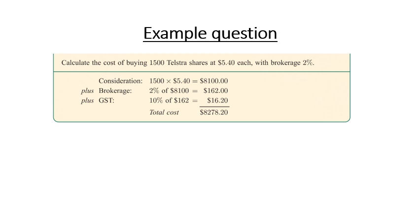So we talked about in the previous slide buying shares and having three different things that you need to take into consideration. So we've got the consideration which is basically the amount of shares you're buying at the price. So here we're looking at 1,500 shares at $5.40 each. So we multiply that to give us our total consideration here.